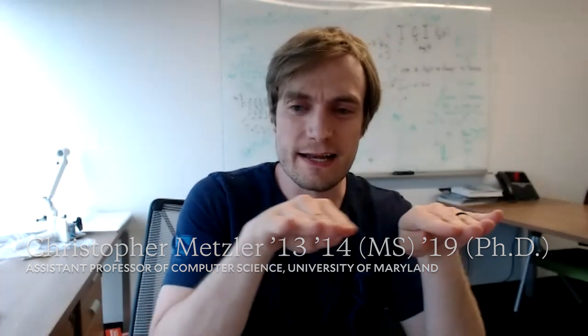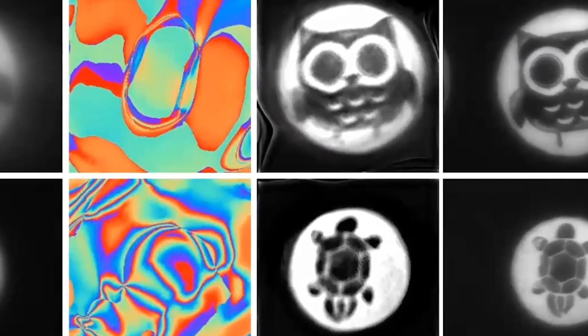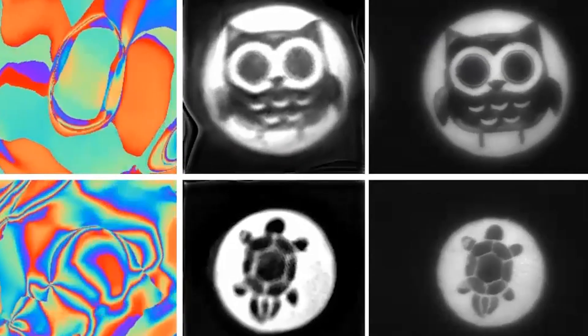You want a nice plane wave but you've got some scoops in it. Our method is essentially filling in those scoops — undoing those aberrations — either optically with the spatial light modulator or computationally.